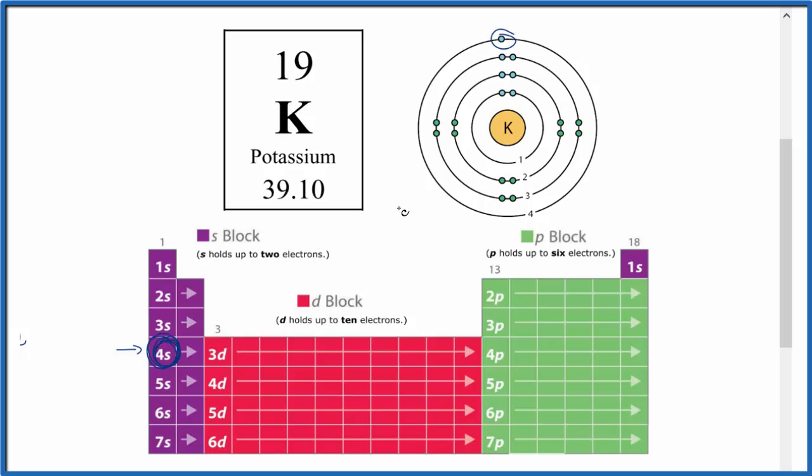If you need help with the number of neutrons or with the electron configuration for potassium, there's a link at the end of this video. This is Dr. B with the atomic structure for potassium. We looked at the Bohr diagram or Bohr model for the potassium atom. Thanks for watching.